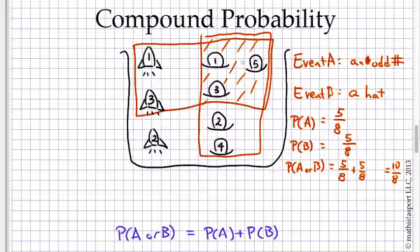So what we really need to do is subtract off the overlap. And there's three. Three of these are both odd, as well as hats. And if we subtract off the overlap, then we get the right answer, which is seven out of eight.